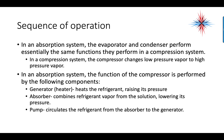In an absorption system, the evaporator and condenser perform essentially the same functions as they do in a compression system. In a compression system, the compressor changes low-pressure vapor to high-pressure vapor. In an absorption system, the function of the compressor is performed by the generator, which heats the refrigerant, raising its pressure. The absorber then combines the refrigerant vapor from the solution, lowering its pressure, and the pump recirculates the refrigerant from the absorber to the generator.